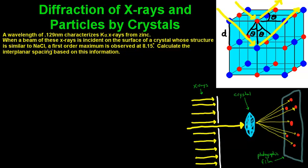Calculate the interplanar spacing based on this information. We've got our crystalline structure here and this is sodium chloride. We've got these ions, our sodium ions and our chlorine ions, and what happens is these x-rays are going to hit these ions and they're going to reflect off.